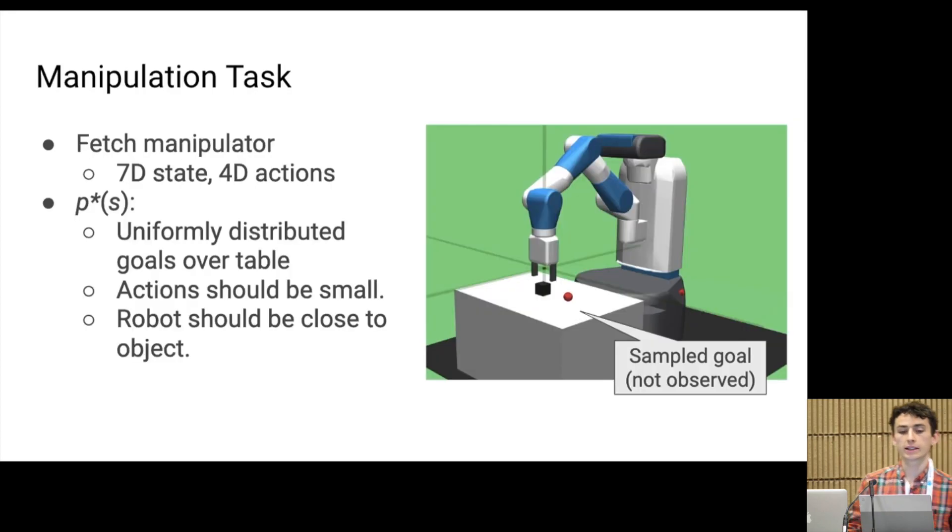The second environment that we look at is a manipulation environment where we consider tasks that are picking and placing. As before, during training, the robot will have access to plausible goal locations, in this case just for the block. And at test time, we will sample a goal from this distribution and the robot could move the block to this goal location as quickly as possible.